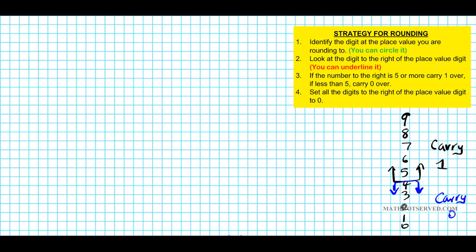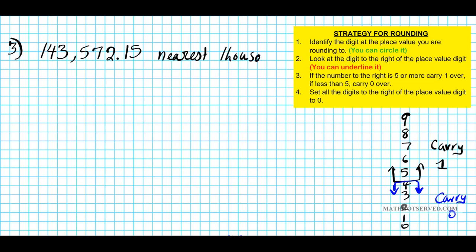Alright, let's take a look at problem number 3. What if we have 143,572.15 and you're asked to round to the nearest thousand? First thing we're going to do in step 1 is identify the digit at the place value we're rounding to: ones, tens, hundreds, thousands — circle that. Now we take a look at the number to the right of the place value digit of 3. The number to the right is 5. The question is: is this number 5 or greater, or is it less than 5?